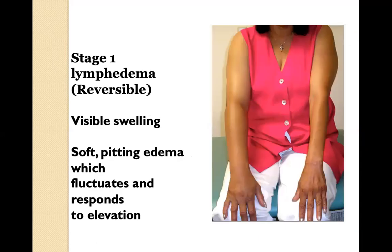Stage one is reversible lymphedema. The edema is very soft and pitting, often fluctuating and reducing with elevation. There is definite edema in the hand and arm, but not severe. Rather than just education and self-treatment, this patient may require clinic visits for manual lymphatic drainage and instruction in compression treatment or self-massage.